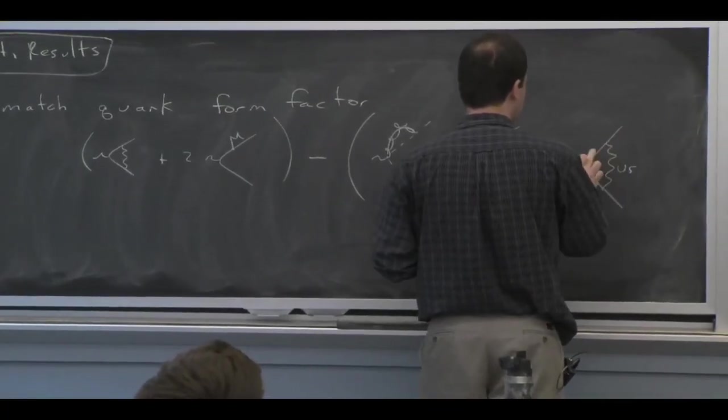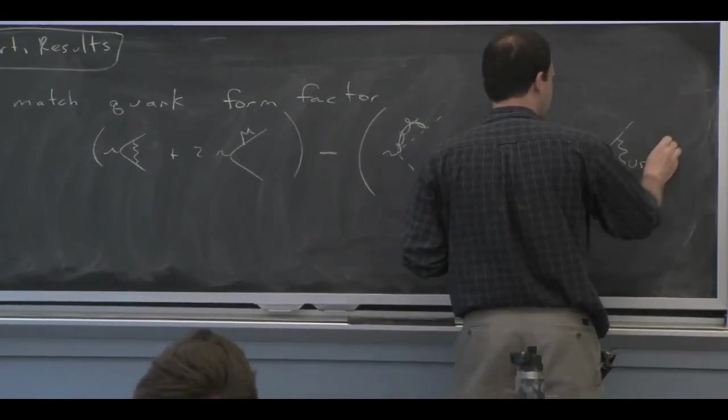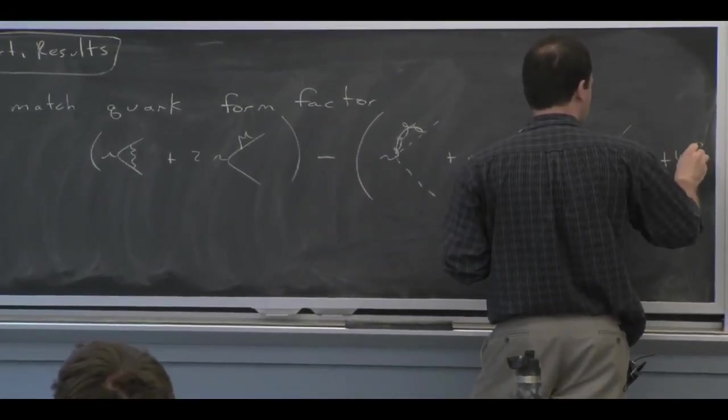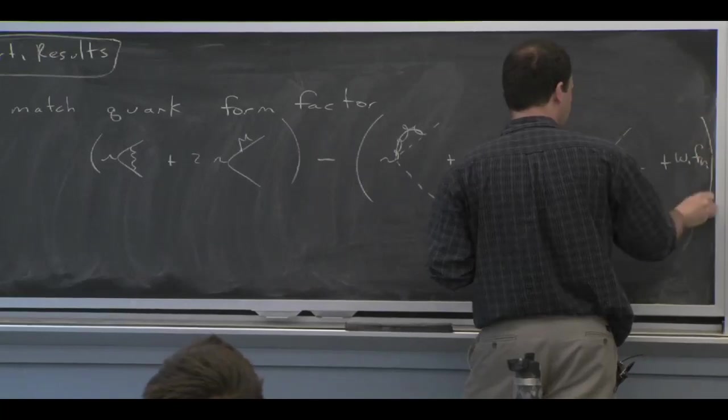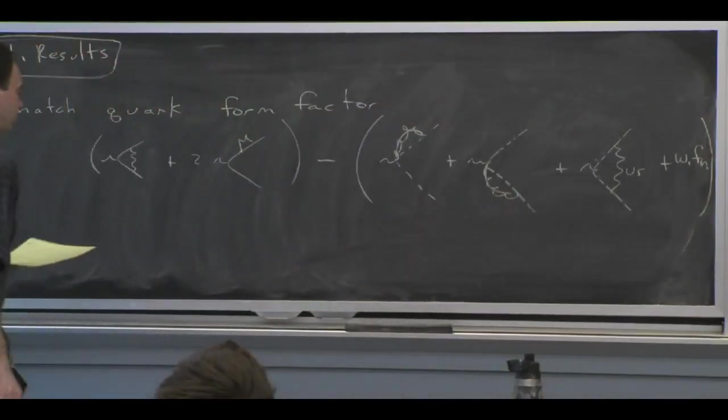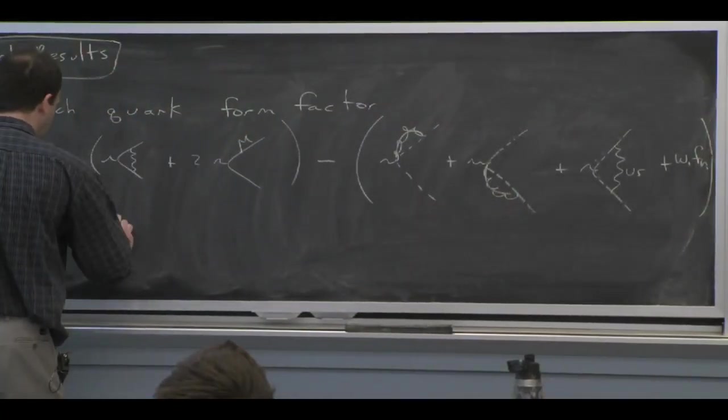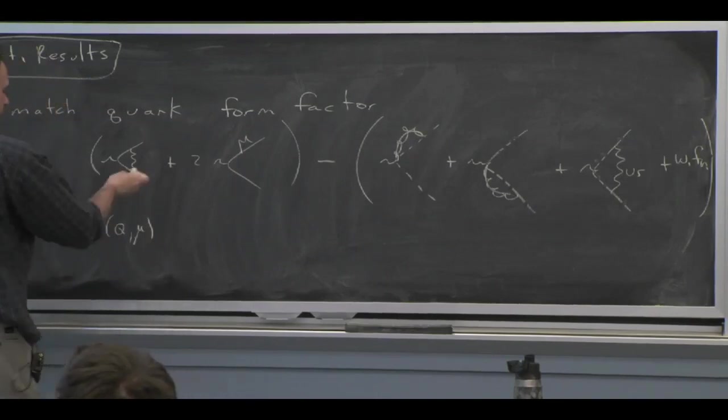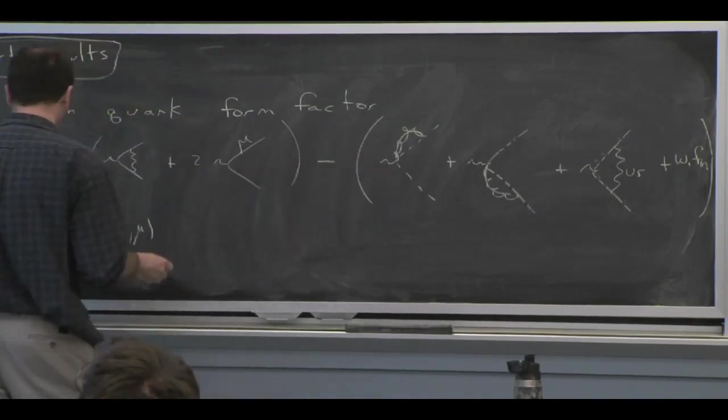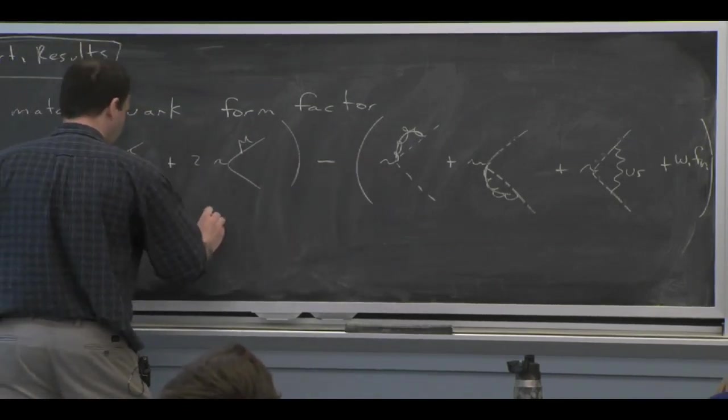So those are collinear gluons. This is an ultra soft gluon. And there's some wave function graphs that you can consider. We form the difference. And at one loop, we check that all the IR divergences between this and this cancel. And then we get the Wilson coefficient.